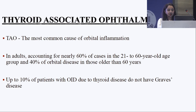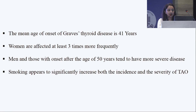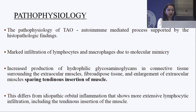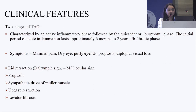Thyroid-associated ophthalmopathy is the most common cause of orbital inflammation in adults, accounting for nearly 60% of cases. Mean age of onset is around 40 years, more common in women, and smoking appears to be a significant factor for increased severity. The pathophysiology is an autoimmune-mediated process with marked infiltration of lymphocytes and macrophages, leading to swelling of the extraocular muscles that spares the tendinous insertion — an important differentiation from idiopathic orbital inflammation, which includes the tendinous insertions.